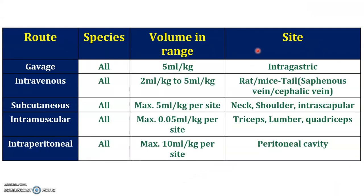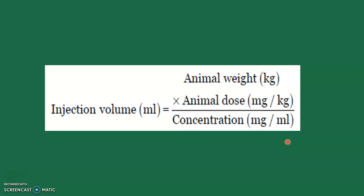Now see this table, which is very important. Please pause and draw this table in your notebook. It lists the routes, species, maximum volume range, and the specific injection site on the body. With the help of this formula, you can calculate the injection volume: Animal weight multiplied by animal dose, divided by the concentration given in your manual. You can calculate the required volume easily using this formula.